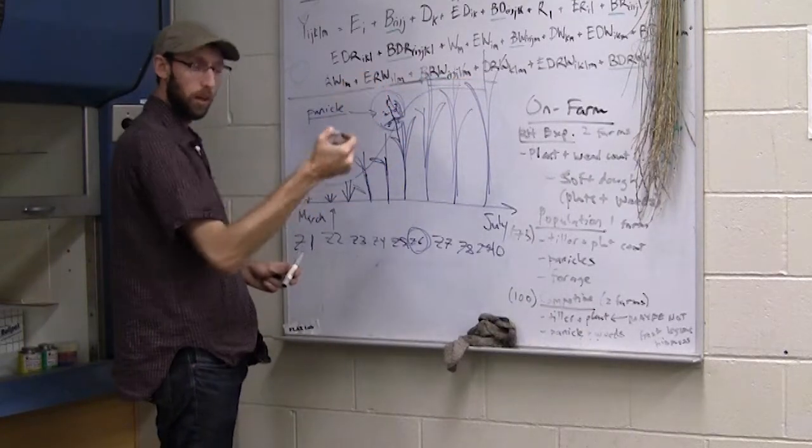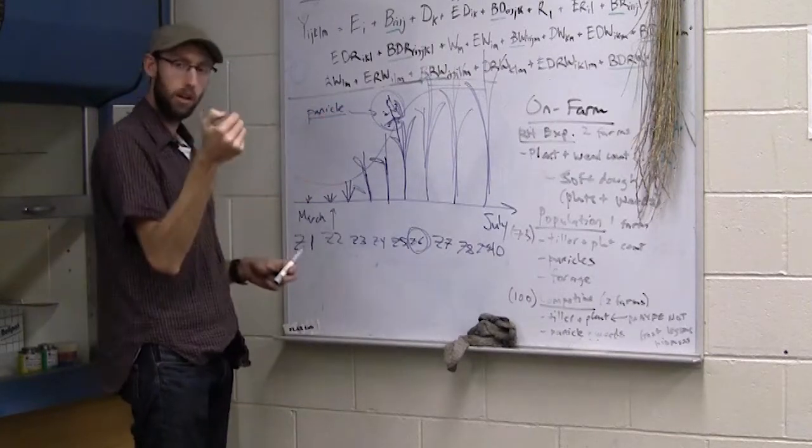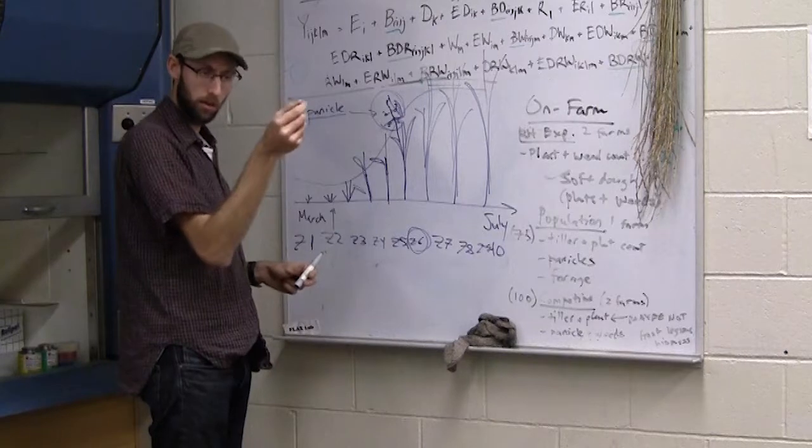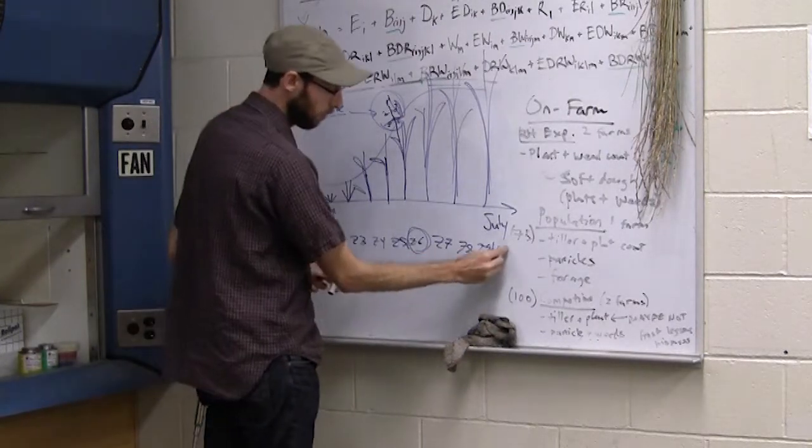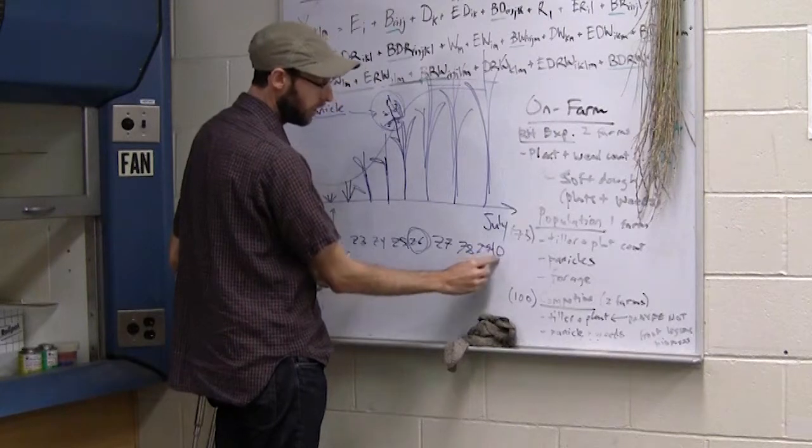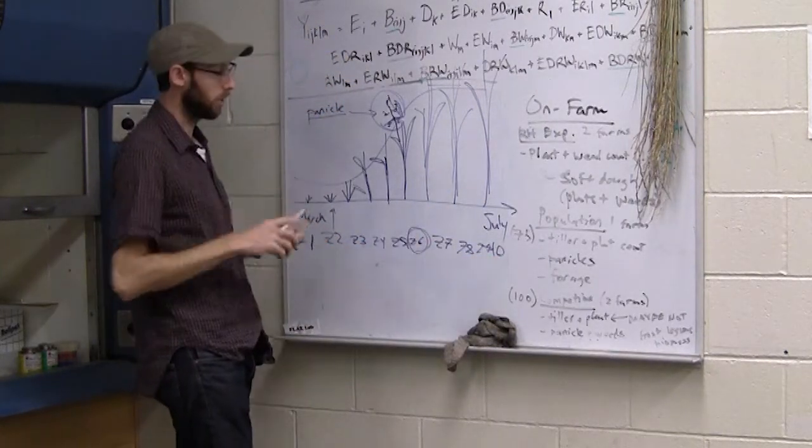And that kernel, when you press on it now, you shouldn't really, if it's mature, be able to dent that oat kernel much more than just a little bit with your thumbnail. So once again, when we get between Z9 and Z10, that's when the grain is really ready to go and physiologically mature.